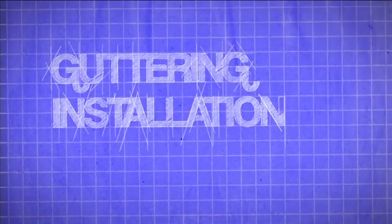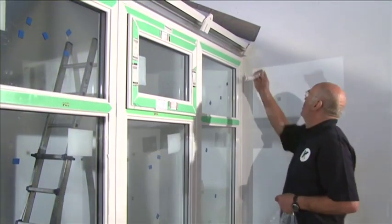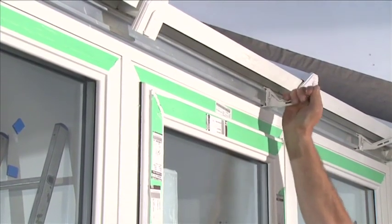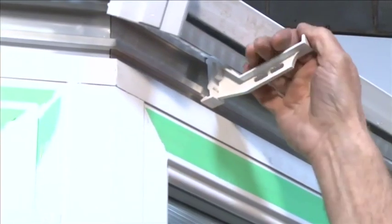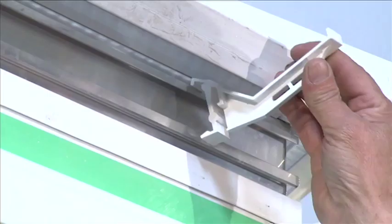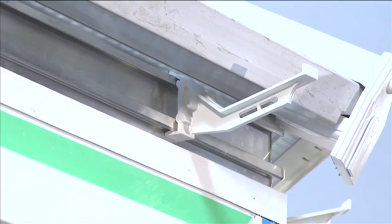Guttering installation. OG gutter support brackets should be positioned 150 mm from each corner and the remainder equally spaced. To fit the brackets, place the top of the bracket into the groove on the eaves beam. Pull the bracket downwards until it locks into place.